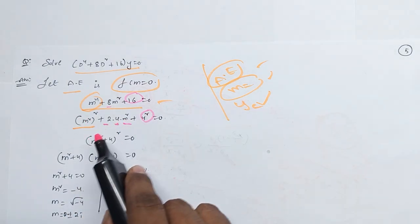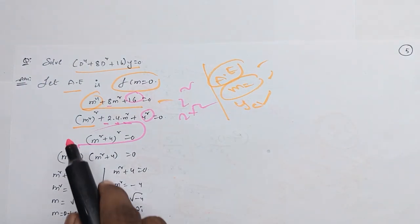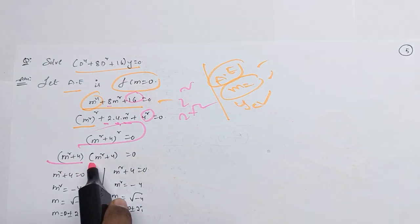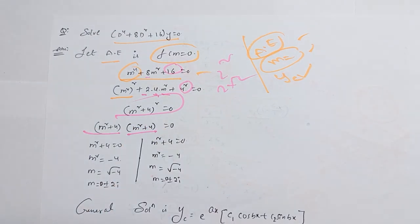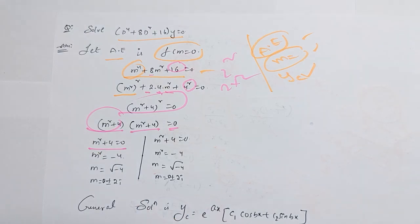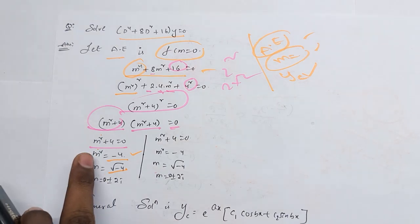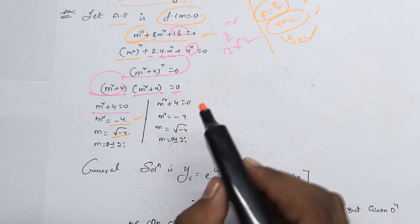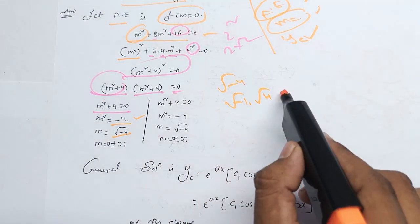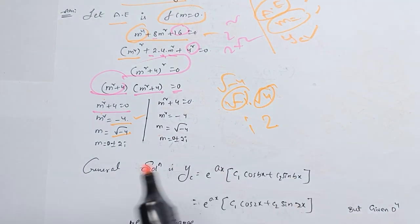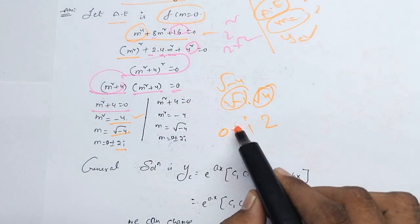m square plus 4, whole square. Observe it — 2 square is 2 into 2. But m square plus 4, whole square is m square plus 4. It is equal to 0. So first value is equal to 0. Plus 4 was there, minus 1. Root was there — square root equal to 1. Observe: root minus 4 is root minus 1 into root 4. Root 4 value is 2. Root minus 1 value is i, so we get 2i.